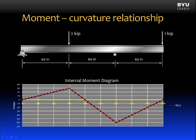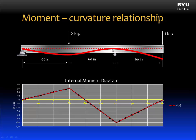Let's begin by considering this beam. This is a simply supported beam with a pin at the left end and a roller and two point loads. There's a cantilever end on the right side. If we were to draw the internal moment diagram, it would look like this. Now let's consider what the deflected shape of this beam would look like. This red line represents an approximation of the deformed shape, and the dotted red line represents the original shape drawn as a line through the centroid.